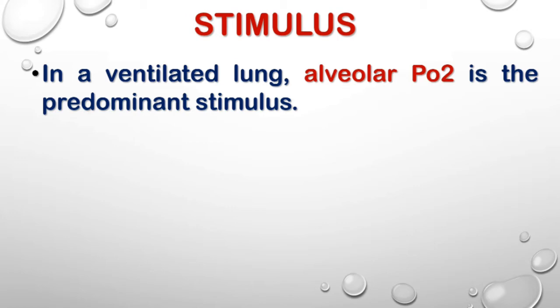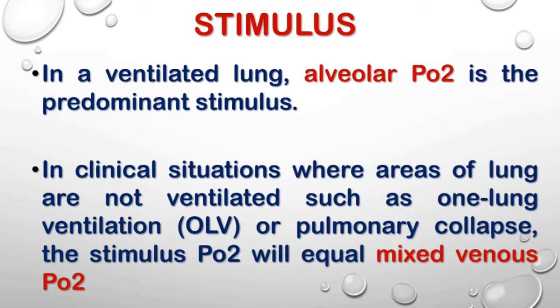However, in clinical situations where areas of the lungs are not ventilated — such as one-lung ventilation or pulmonary collapse — the stimulus for HPV would come from the mixed venous blood, since alveolar ventilation is totally absent, so the low oxygen level is sensed from the mixed venous blood supply.